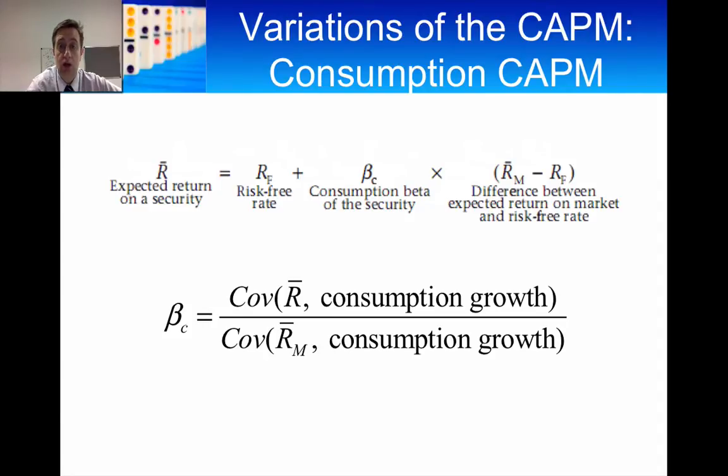And when we consider risk of securities, then we're really considering how the security co-varies with growth in consumption. Or the security return varies with growth in consumption. So if you've got high consumption growth, then does that mean the security return is going to be very high? That would be a high consumption beta. Or if you didn't see the security return moving much with the consumption growth, then you would say it would be a low consumption beta. And the consumption CAPM really just substitutes that beta, the consumption beta, in for the normal beta that we would get for the CAPM.